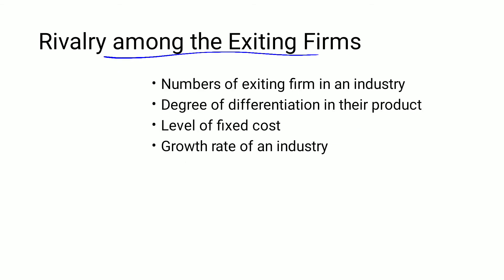The third force is rivalry among existing firms. How intense rivalry is depends on several factors. First, the number of existing firms in an industry: the more firms there are, the more rivalry, and the more competition will drive prices down, so overall profitability will decline — because when competition intensifies, it is the customer who benefits. Second, the degree of differentiation in products: the more differentiation in quality, quantity, or design, the more rivalry, as firms compete to show customers their product is better.